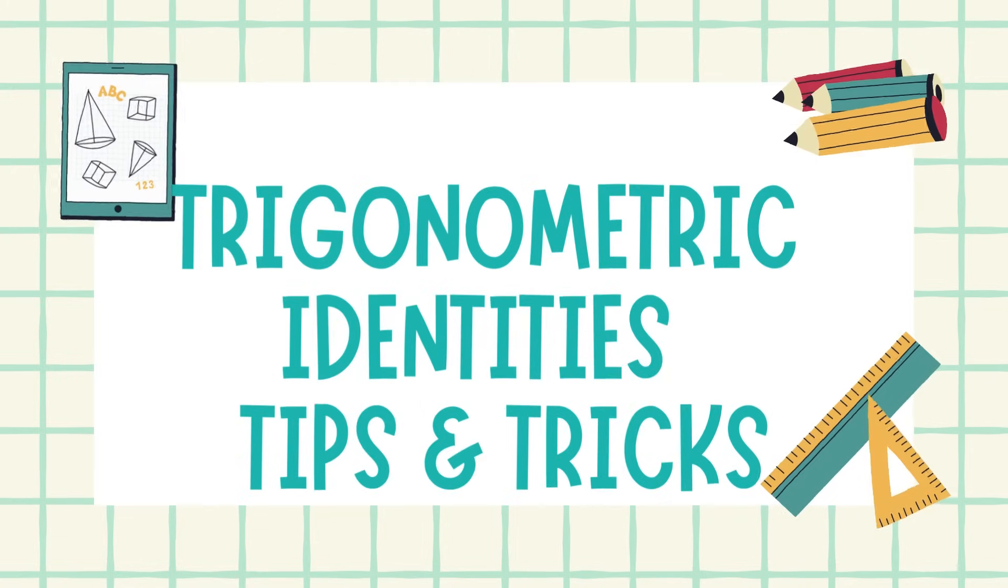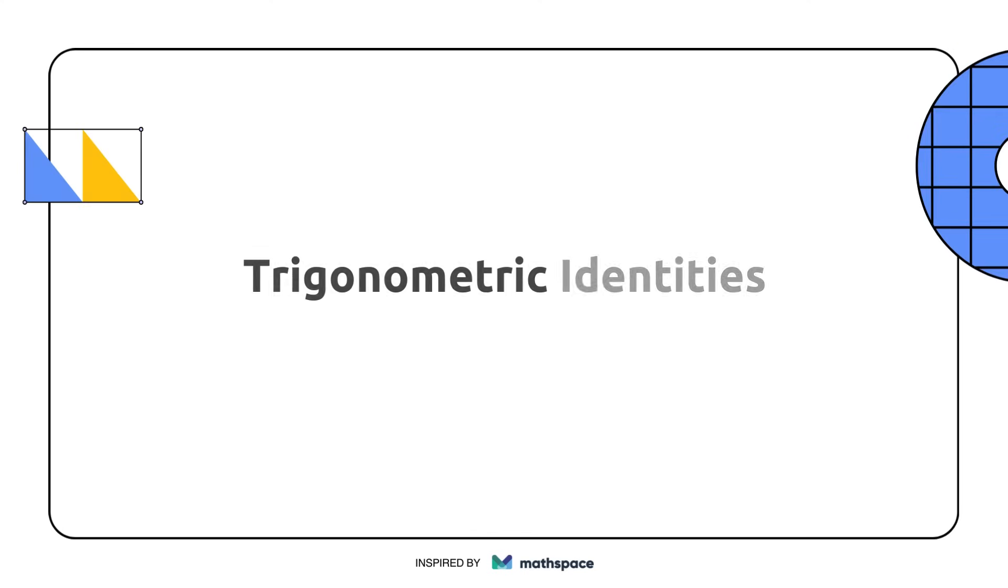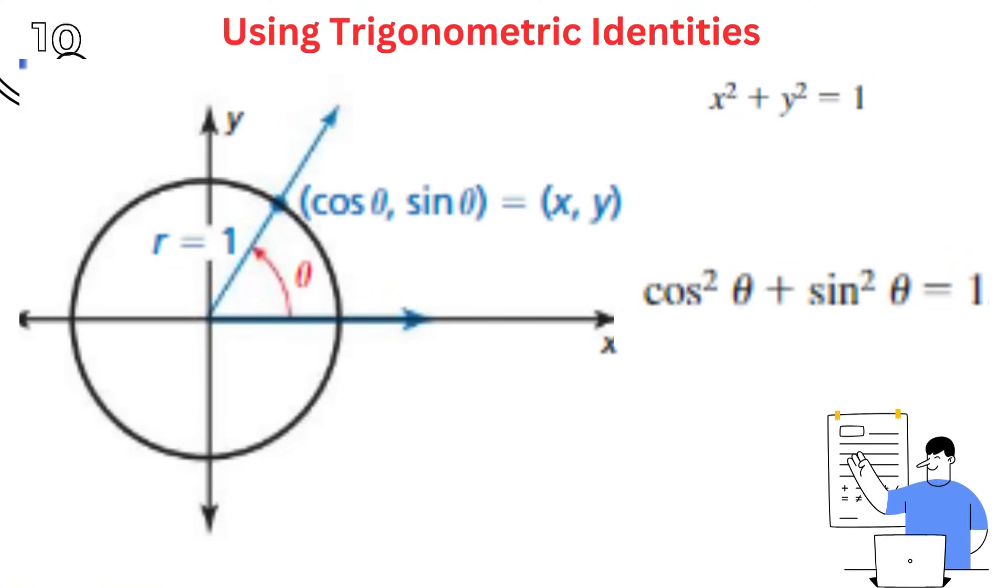Trigonometric identities tips and tricks. Using trigonometric identities, recall that when an angle theta is in standard position with its terminal side intersecting the unit circle at (x, y), then x equals cos theta and y equals sine theta.